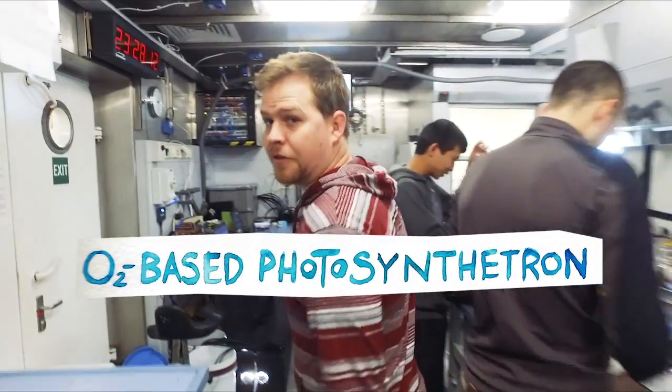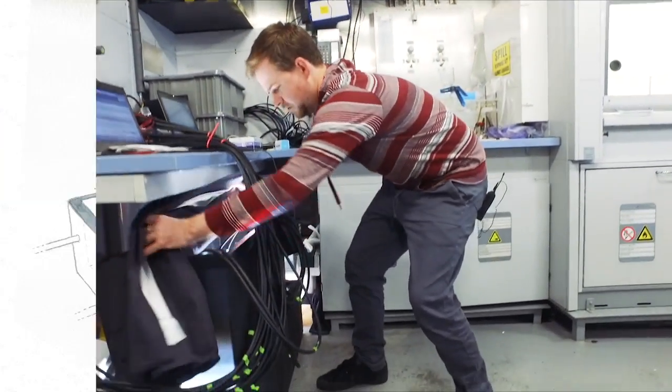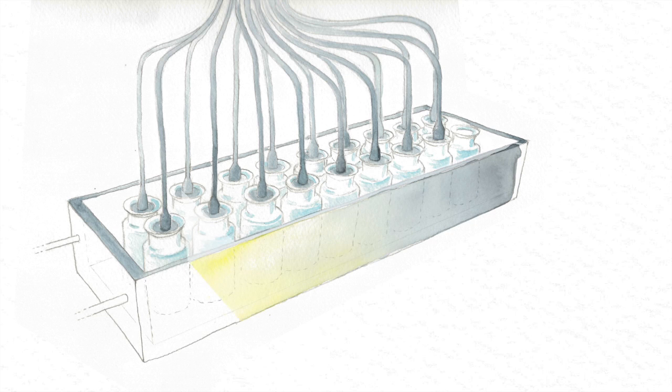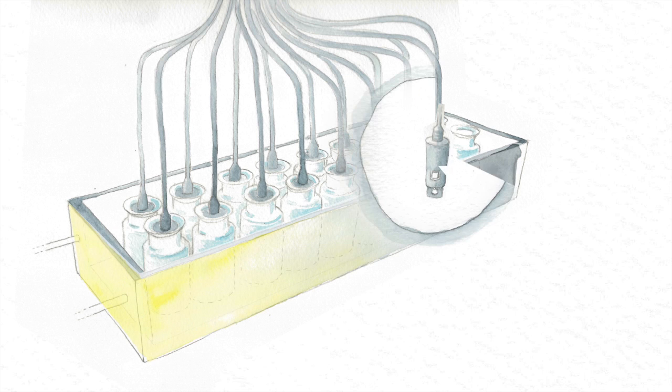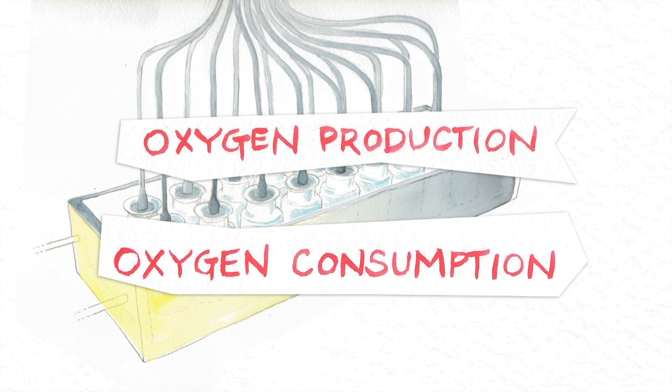We're doing this using a unique instrument called a photosynthetron. The surface water samples are exposed to different light conditions that simulate different depths and time of day. Through these filters we can measure oxygen production during the daylight and oxygen consumption at nighttime.